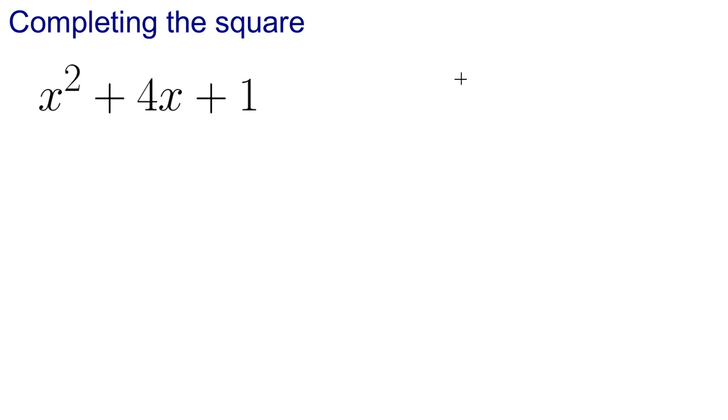This is what we call completed square form. So what we've got is in a bracket we've got an x plus a, and a is a number, that's all squared and then we're adding another number on the end which we're calling b.